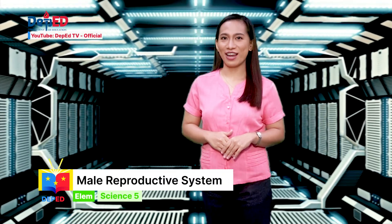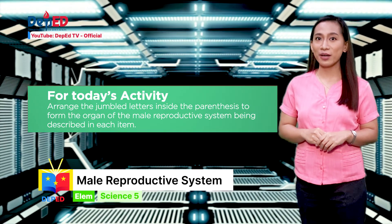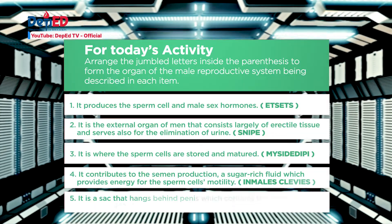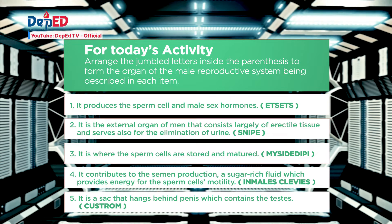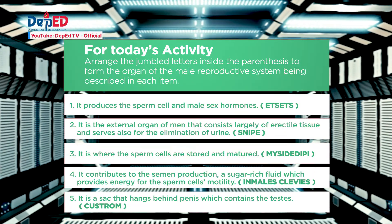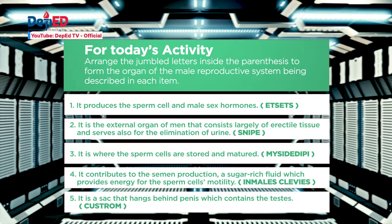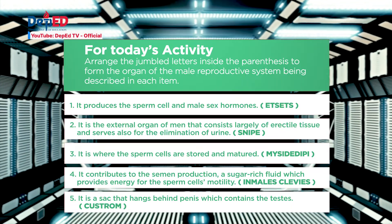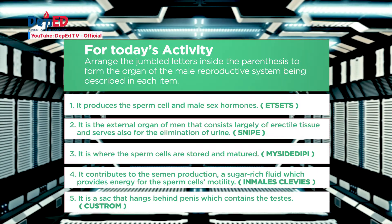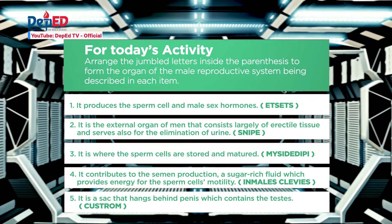Side check! For today's activity, arrange the jumbled letters inside the parentheses to form the organ of the male reproductive system being described in each item. Number 1: It produces the sperm cell and male sex hormones. Number 2: It is the external organ of men that consists largely of erectile tissue and serves also for the elimination of urine. Number 3: It is where the sperm cells are stored and matured. Number 4: It contributes to semen production, a sugar-rich fluid which provides energy for the sperm cells' motility. Number 5: It is a sac that hangs behind the penis which contains the testis.